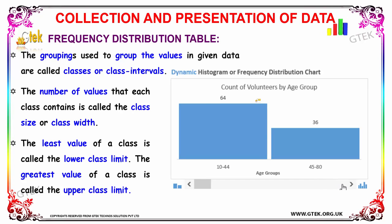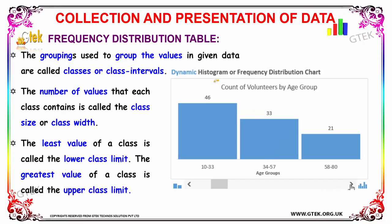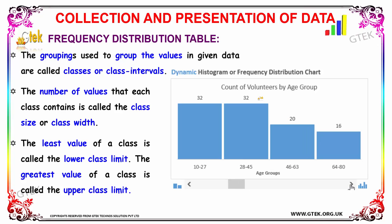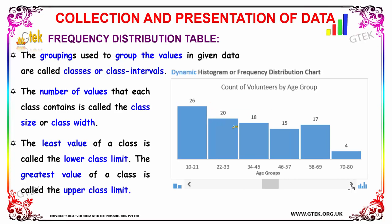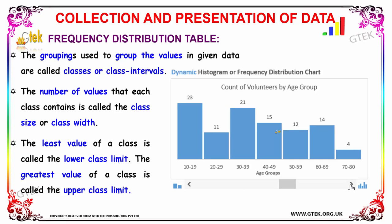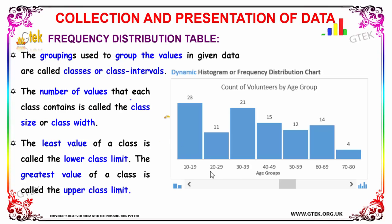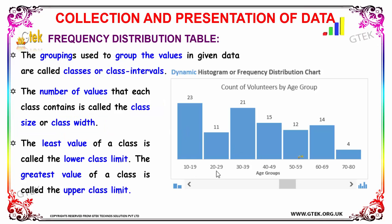In more detail, the groupings used to group values in the given data are called classes or class intervals. The number of values that each class contains is called the class size or class width. The least value of a class is called the lower class limit, and the greatest value of a class is called the upper class limit.